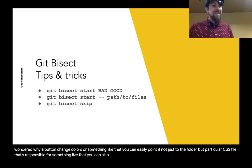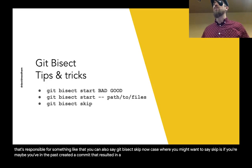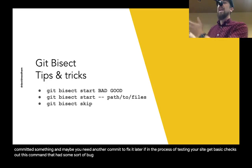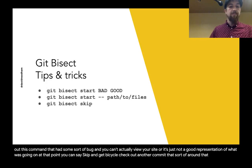You can also say 'git bisect skip.' A case where you might want to skip is if you've previously created a commit that resulted in a white screen of death — you made a mistake, committed something, and maybe needed another commit to fix it later. If in the process of testing, git bisect checks out that commit and you can't view your site or it's not a good representation of what was going on, you can say skip and git bisect will check out another commit around that one.